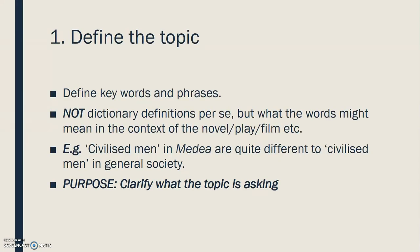The first step is to define the topic—to define the keywords and phrases in the topic, which is extremely important. Because, if you don't do that, then you're not going to know what the topic is asking you to write on. Now, it's not asking you for dictionary definitions per se, but what the words might mean in the context of the novel, play, film, or whatever you are studying. For example, civilized men in the play Medea are quite different to civilized men in general society. The civilized men in ancient Greek society hold quite different values and beliefs to ones in civilized society today, to some extent. So, the purpose of defining the topic is to clarify what the topic is asking. And this also involves clarifying whether you are being asked to discuss something, whether you are being asked to agree or disagree, or explain the extent to which you agree or disagree.